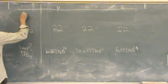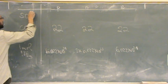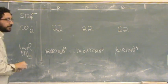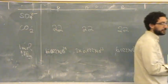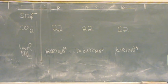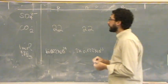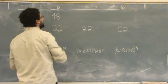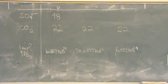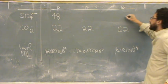Now let's try one ion of sulfate. Sulfur contributes 16 protons. Each oxygen contributes 8, so 8 times 4 is 32, plus another 16 is 48 protons. How about electrons? Because it's a 2-minus ion, you add 2 to that — so 50 electrons.